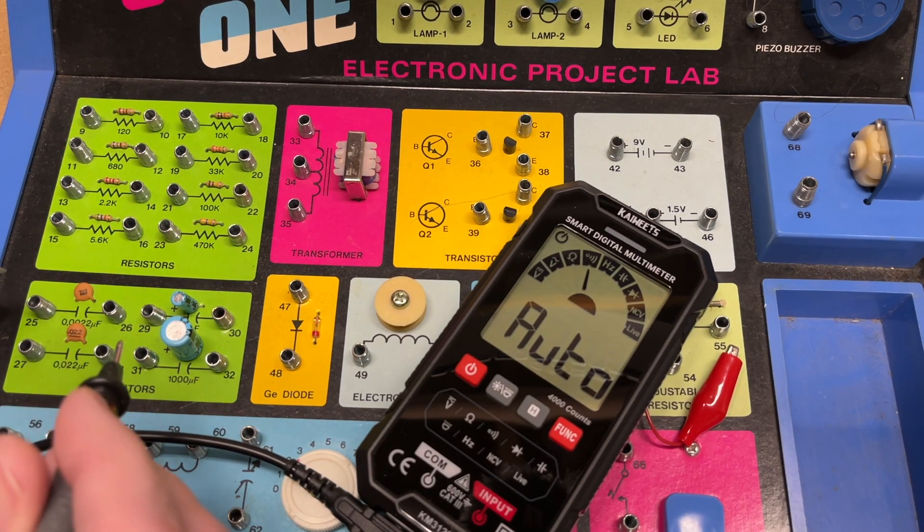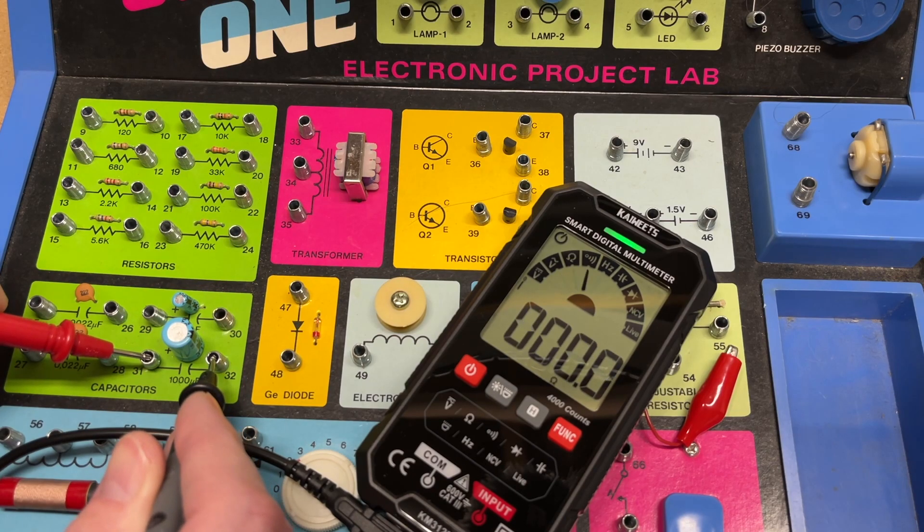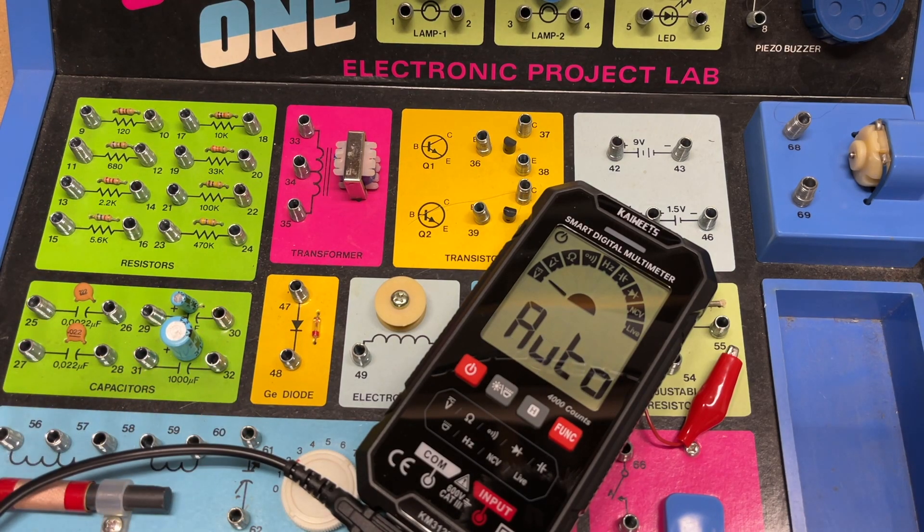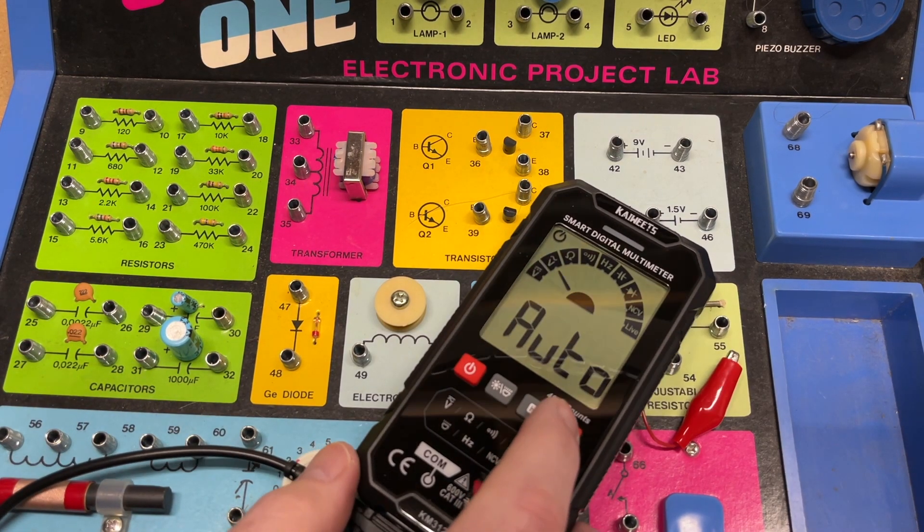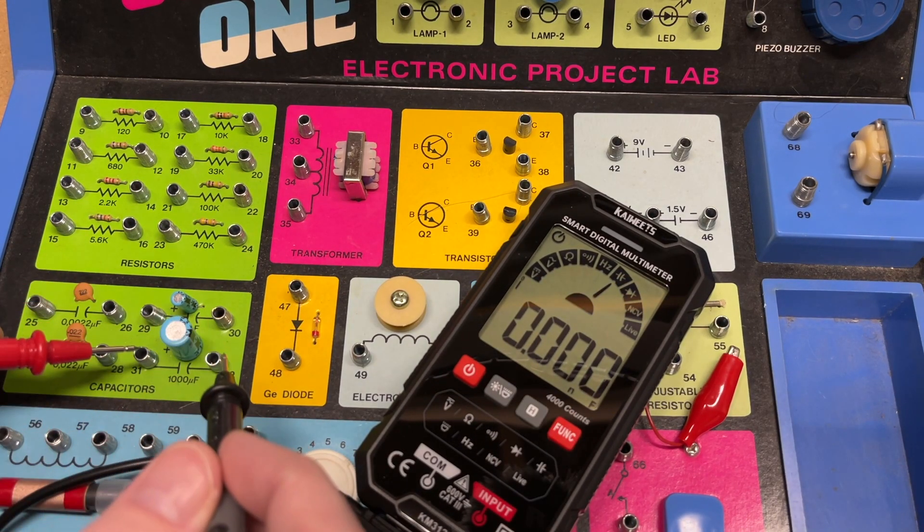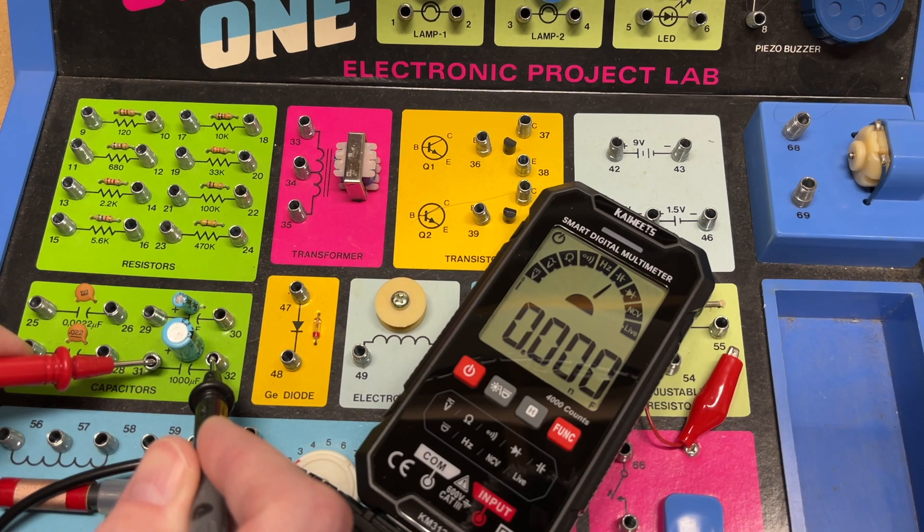Those are resistors. Let's try a capacitor. Here's a 1000—I'll want to hold it down onto this for a while. This is measuring this as a resistor, so I think we need to go to the capacitor function. There we go, now let's try this again.